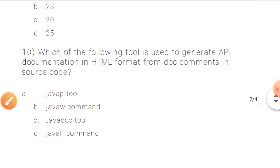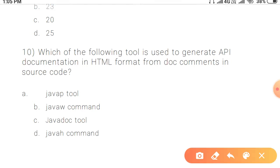Question 10: Which of the following tool is used to generate API documentation in HTML format from the doc comments in source code? The answer is the Javadoc tool. It generates API documentation from doc comments in the source code.